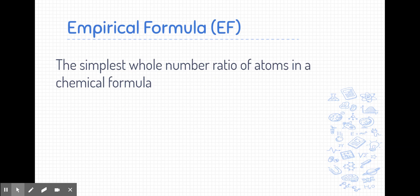The empirical formula, or EF as we will refer to it, is the simplest whole number ratio of atoms in a chemical formula. The empirical formula is also referred to as the simplest formula for the reasons stated in this definition.